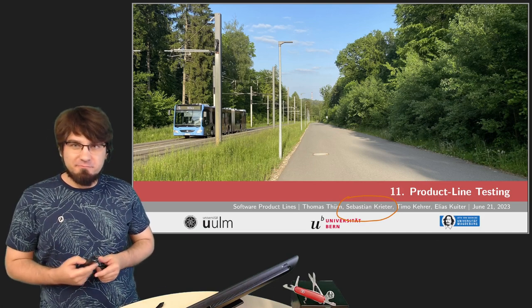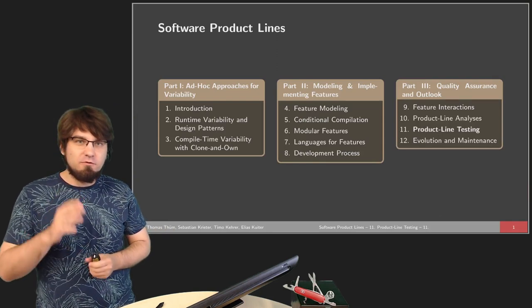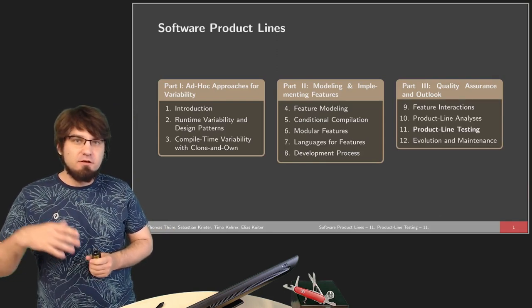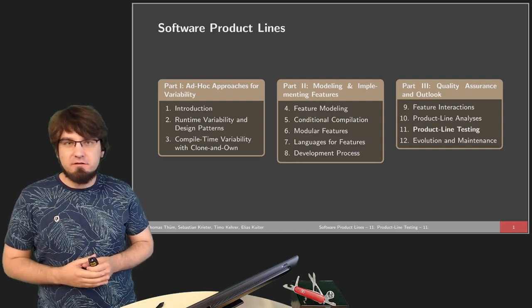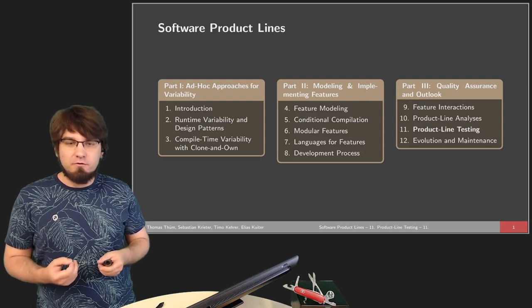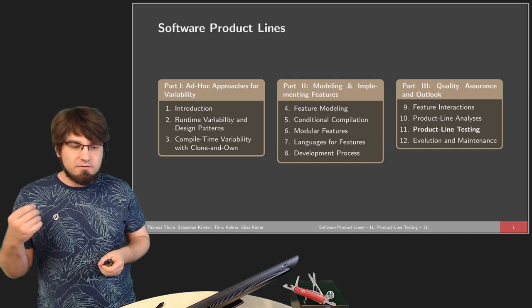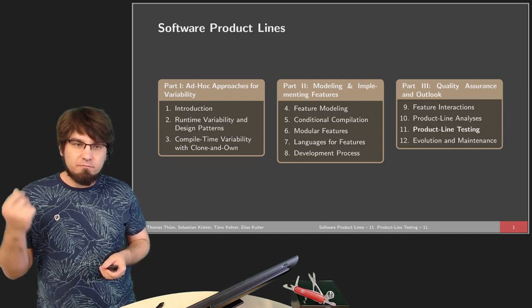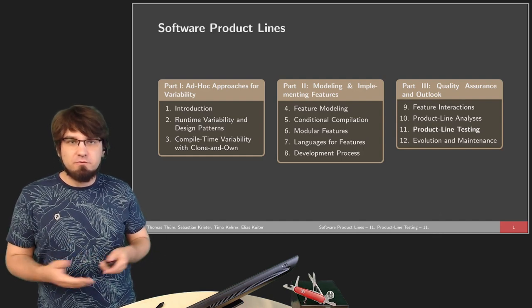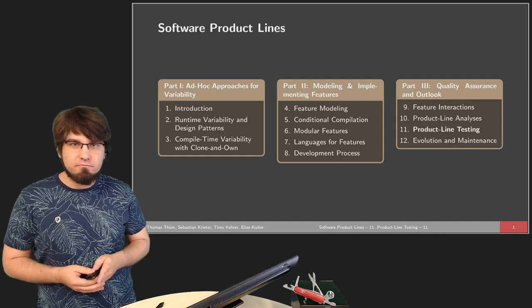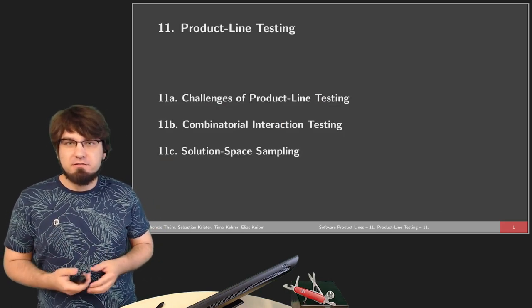So first of all, what are we talking about today? We're looking at product line testing. You've already looked at what a product line is, how to develop one, and how to analyze specific properties. Today we're going to look at how to test a product line — meaning, we want to see whether it's bug-free and whether it adheres to specifications and requirements so that everything behaves as intended.